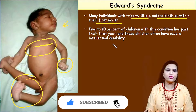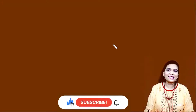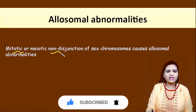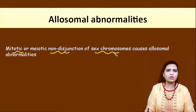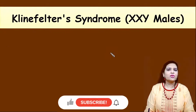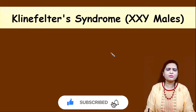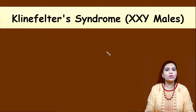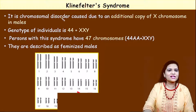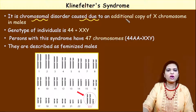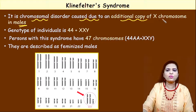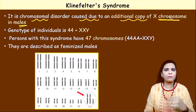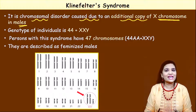So far we have seen autosomal chromosomal abnormalities. Now let's move on to allosomal abnormalities — any mitotic or meiotic non-disjunction which occurs in the sex chromosome. The first and most common example is Klinefelter syndrome. Klinefelter syndrome is the commonest among allosomal abnormalities. It is a chromosomal disorder caused due to an additional copy of X chromosome in a male.